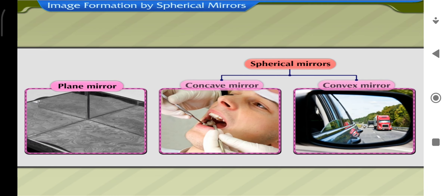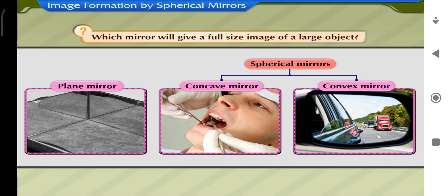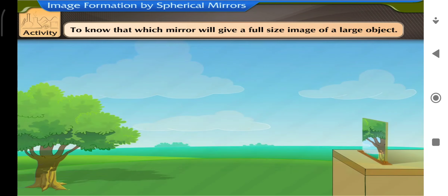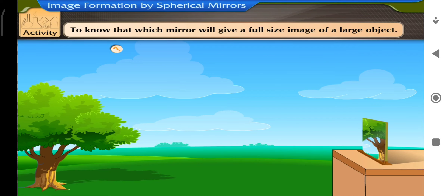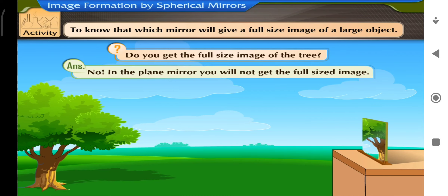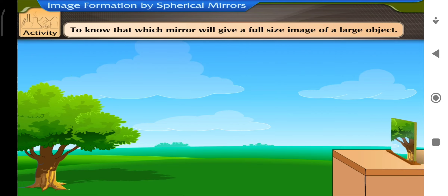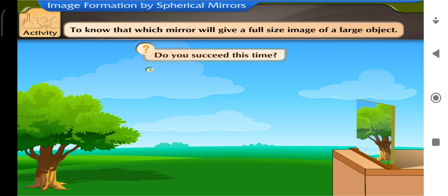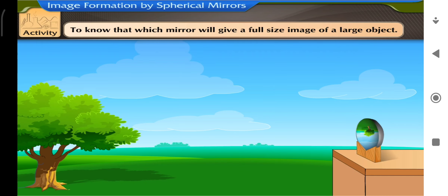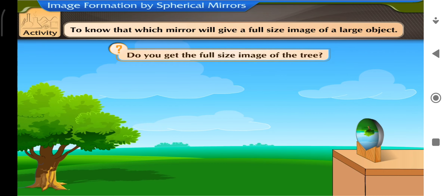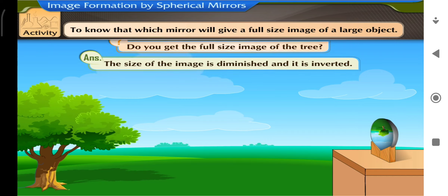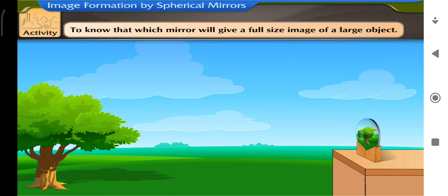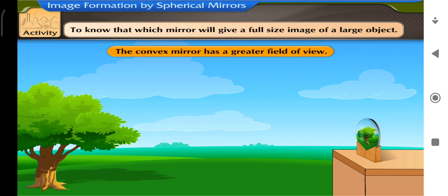Having learnt about image formation in plane and spherical mirrors — which mirror gives a full-size image of a large object? In a plane mirror of any size, you will not get a full-sized image of a distant tree. Trying a concave mirror, the image is diminished and inverted. With a convex mirror, you will be successful because the convex mirror has a greater field of view. Convex mirrors always produce a smaller, virtual and erect image, so they are used as side-view mirrors in vehicles, spreading images over a larger area with a wider field of view.